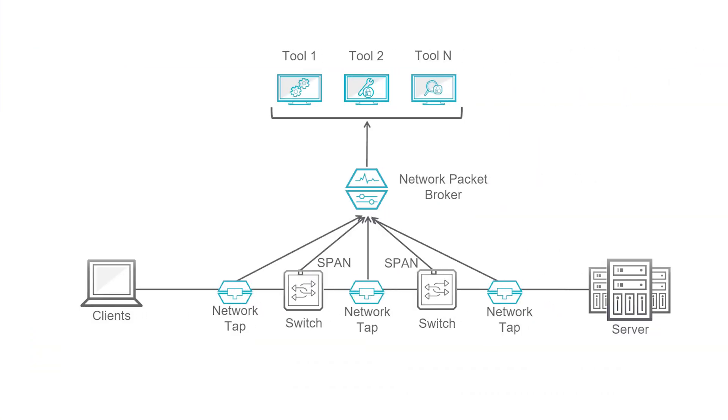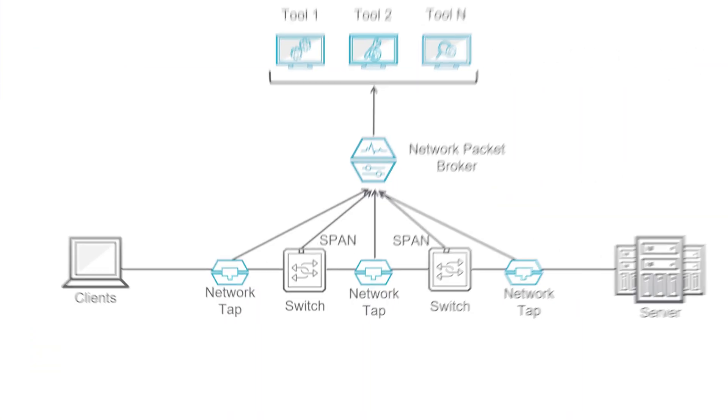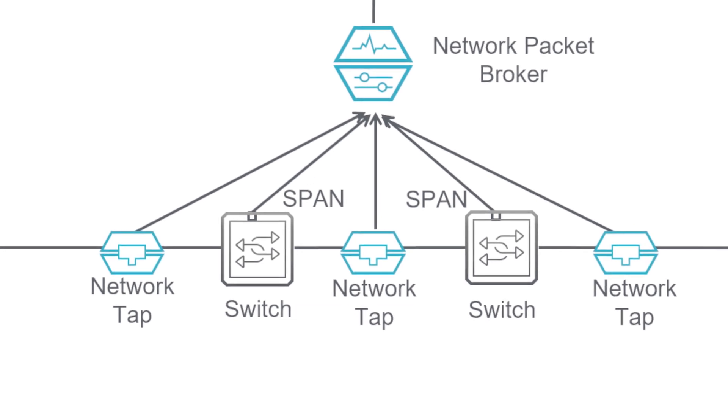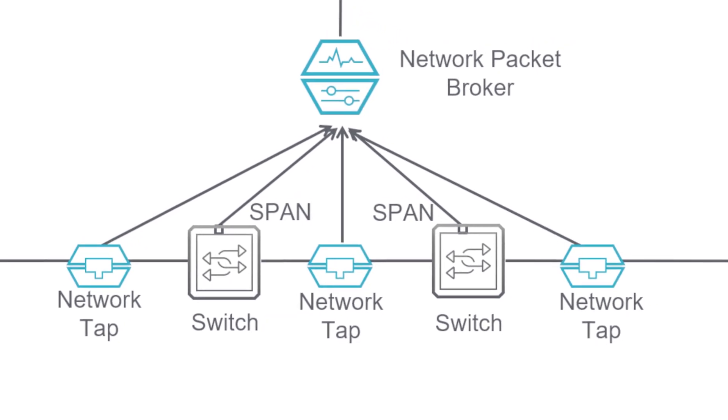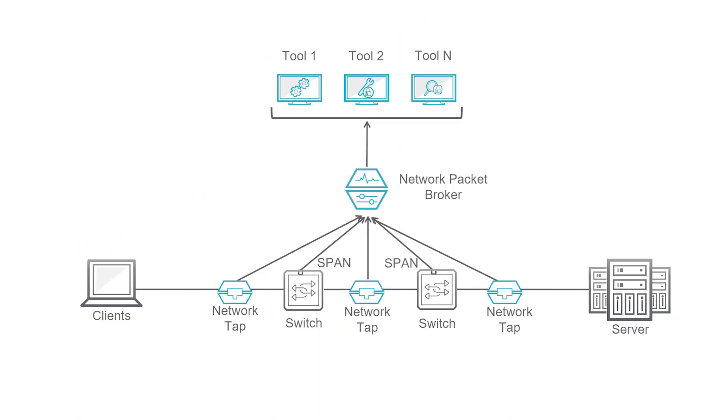Well, there's an easy solution for that: a visibility architecture. At its core, a visibility architecture is an end-to-end infrastructure that captures data across the entirety of your network, enabling physical and virtual network, application, and security visibility. To create a visibility architecture like this, first you need to deploy taps or span ports across your network so that you can access monitoring data.